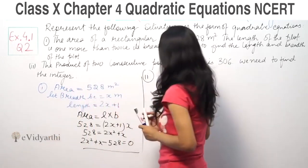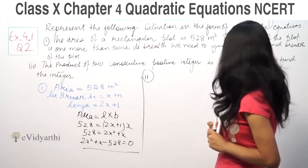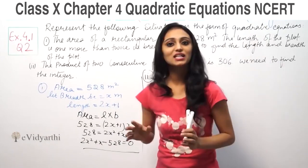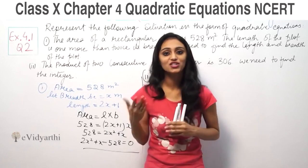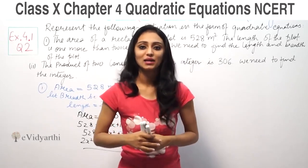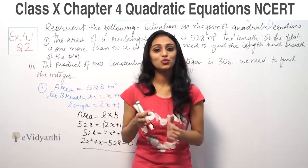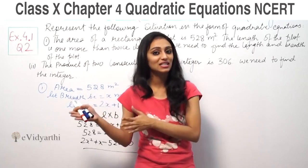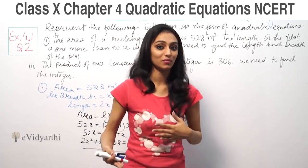The product of two consecutive positive integers is 306, we need to find the integers. Consecutive numbers are those that come one after another in sequence, like 1, 2, 3, 4, or 17, 18, 19, 20.